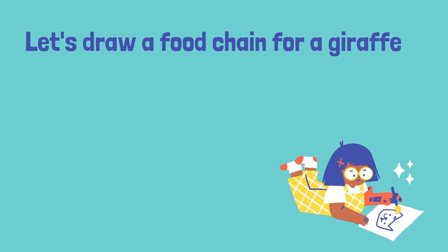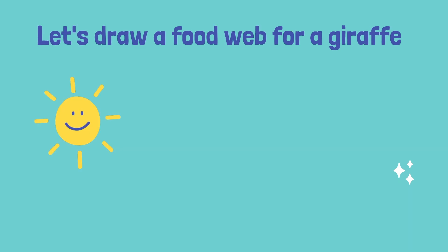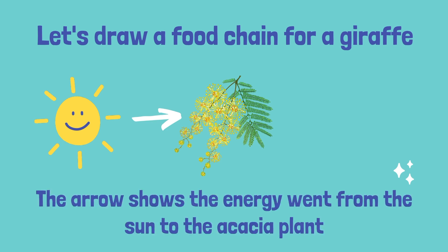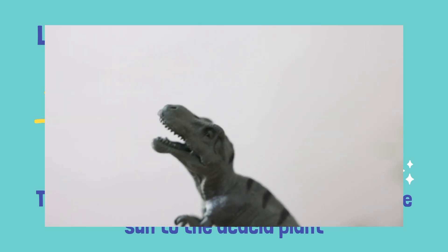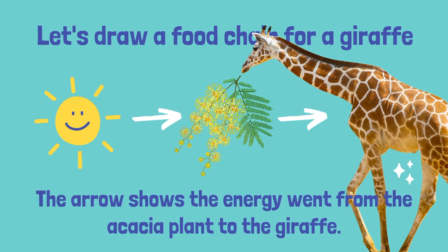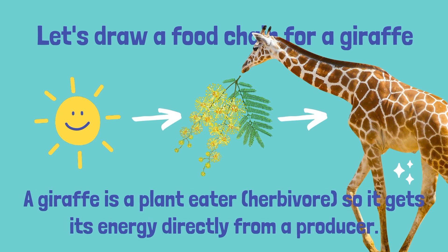Let's draw a food chain for a giraffe. The first source of energy is going to be the sun. The sun will send its energy to an acacia plant — that's what a giraffe likes to eat. The arrow shows the energy went from the sun to the acacia plant, and then the energy flowed from sun to acacia plant to giraffe. A giraffe is a plant eater, an herbivore, so it gets its energy directly from a producer.